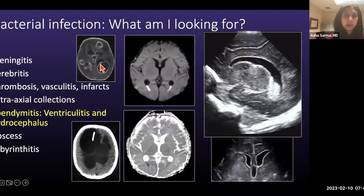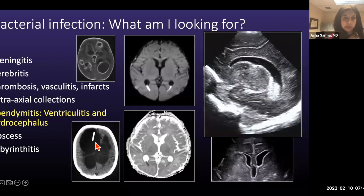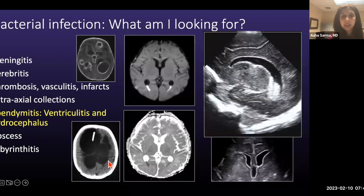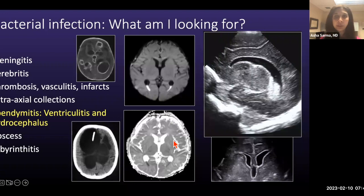Ependymitis — ependymal inflammation can lead to hydrocephalus. Here's a patient with very severe ependymitis forming walled-off cysts within the ventricular system that may not communicate with one another, making neurosurgical management very complex. When doing follow-up, it's important to evaluate all areas separately. Another finding to look for is pus within the ventricles — seen very well on DWI as low diffusivity layering within the occipital horns of the lateral ventricles. These may be tiny dots, but always look for them. On ultrasound, you may see ependymal hyperechogenicity and pus or low-level echoes layering within the ventricles.